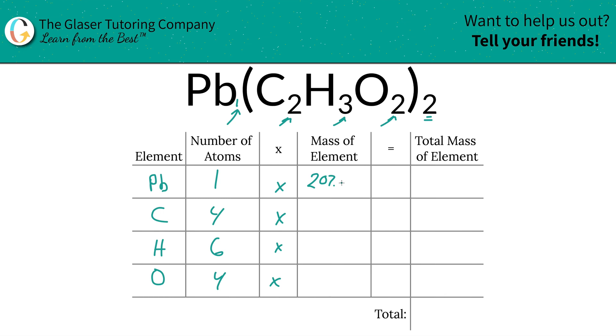So those are the numbers we're going to write down. 207.20 for lead. Carbon, 12.01, hydrogen, 1.01.